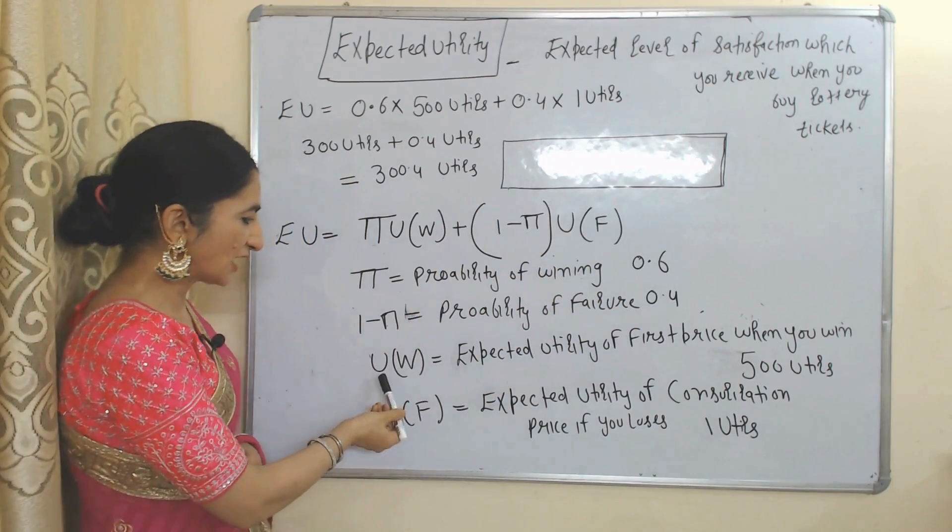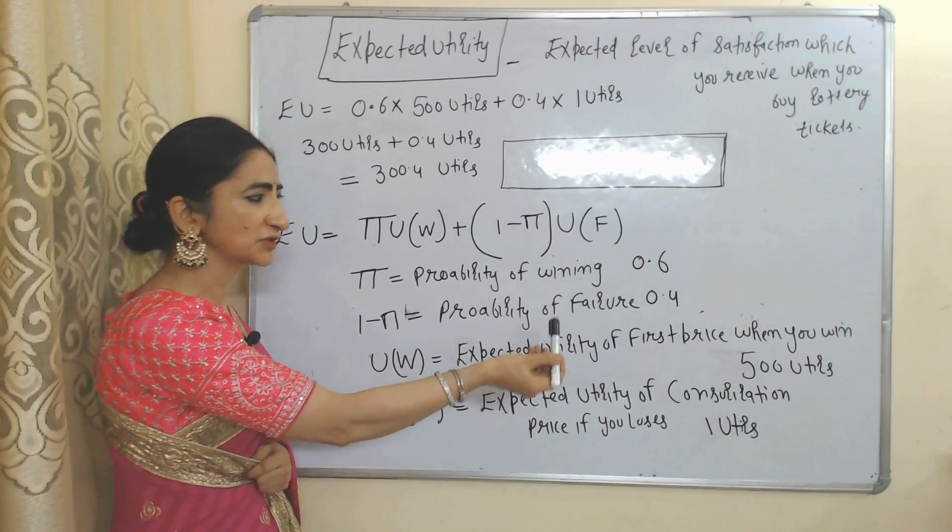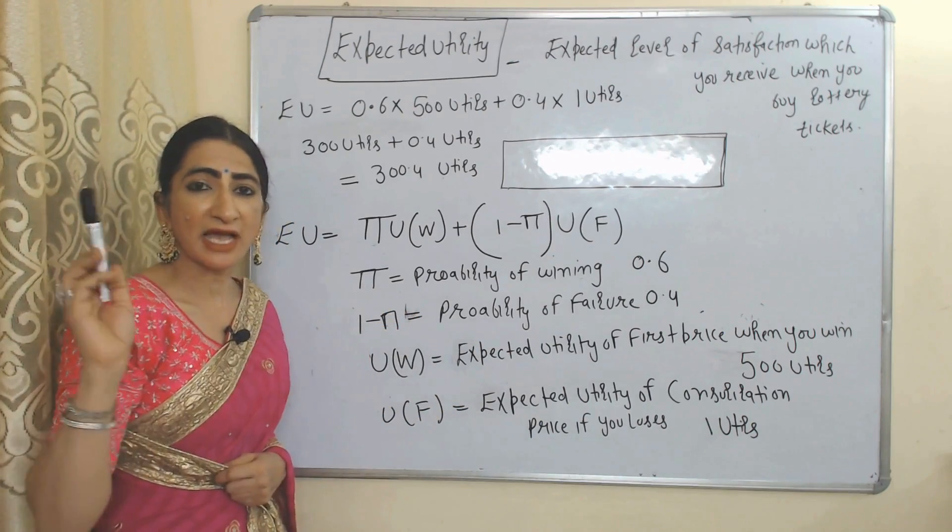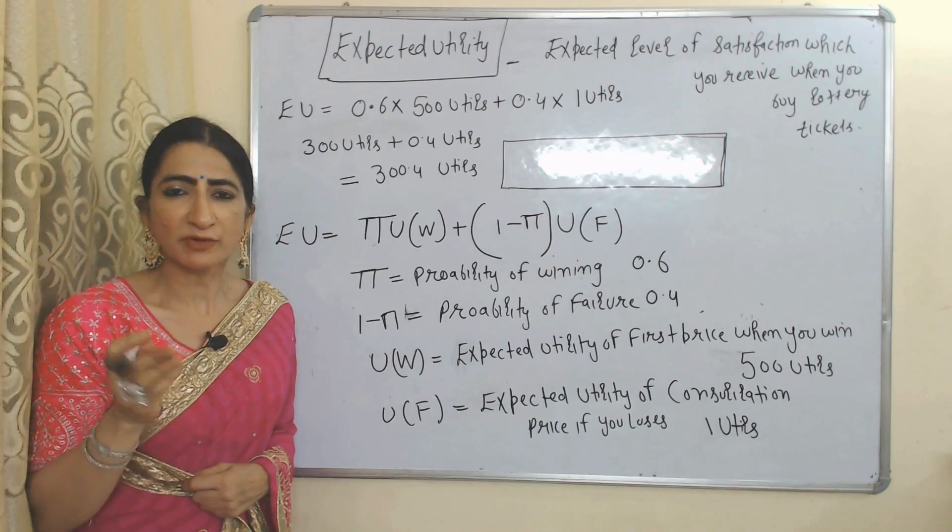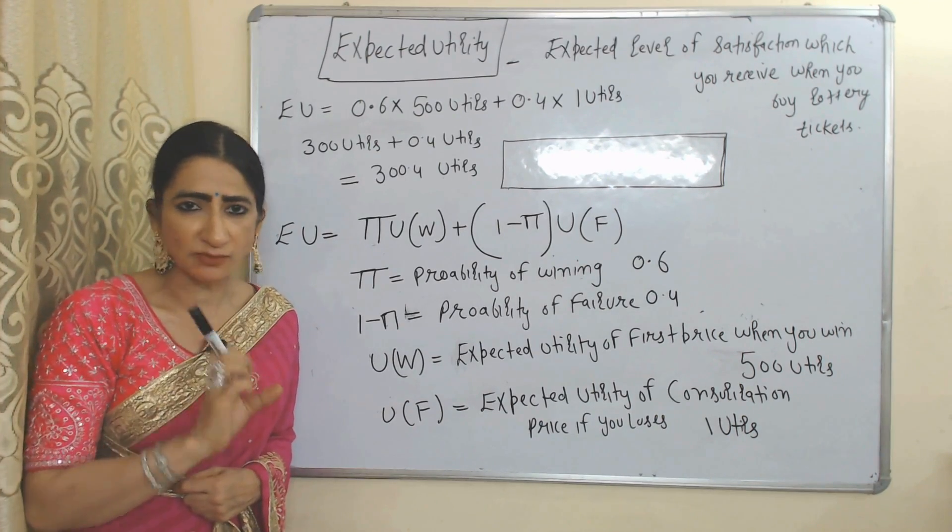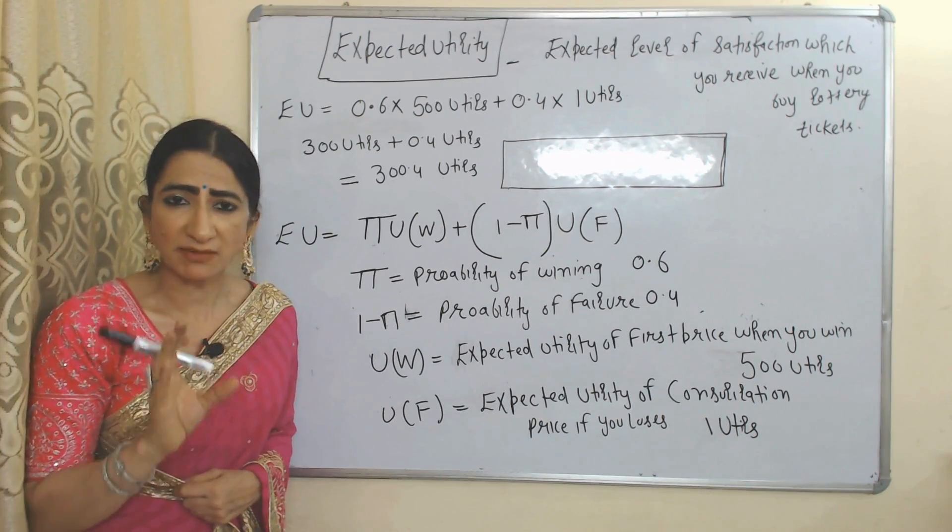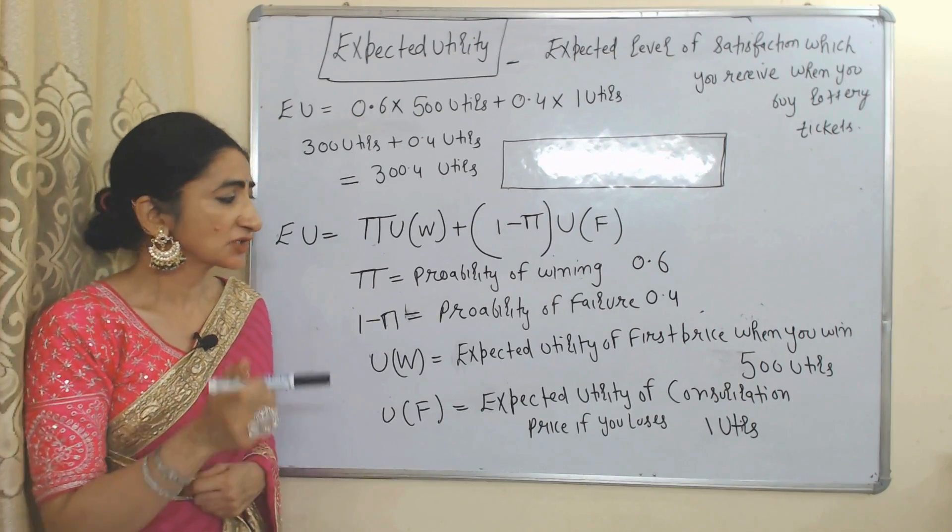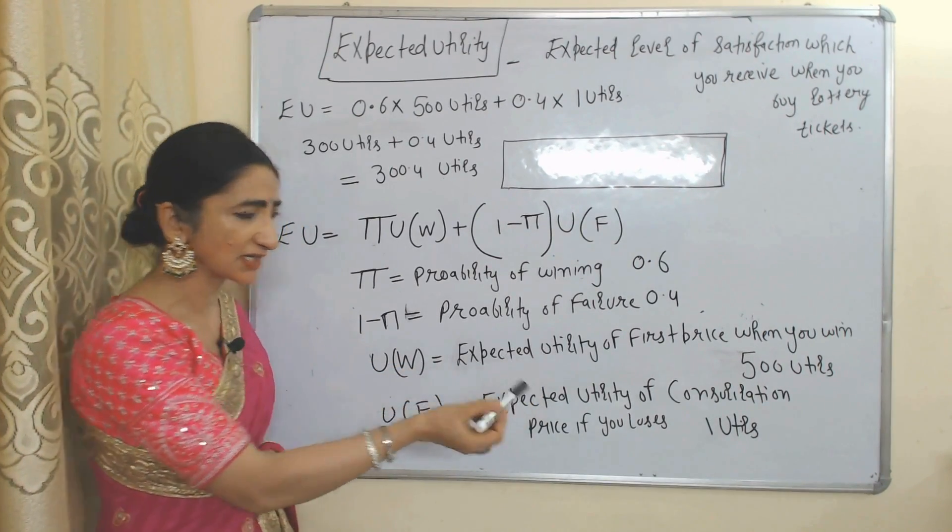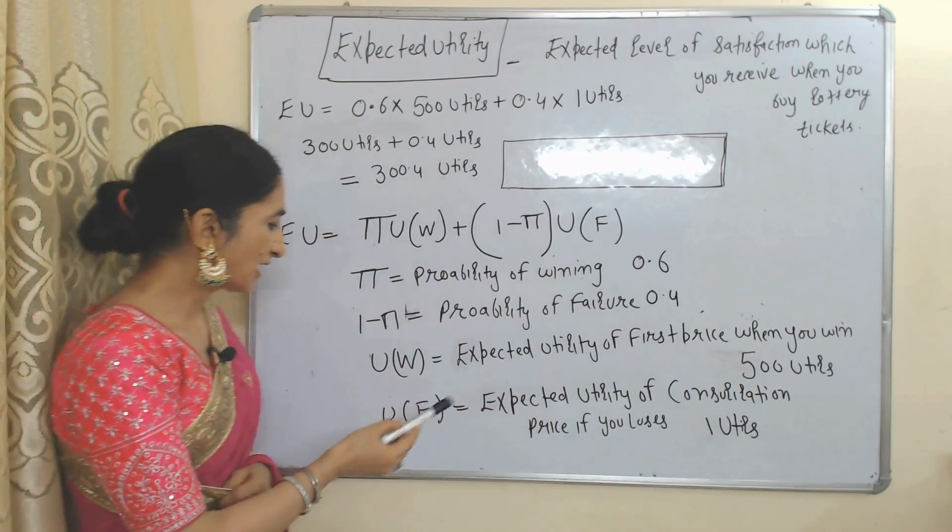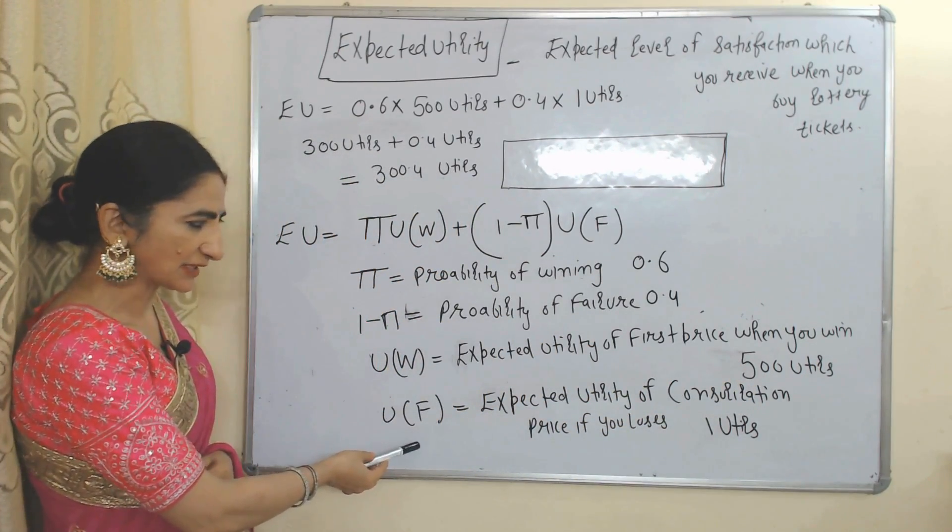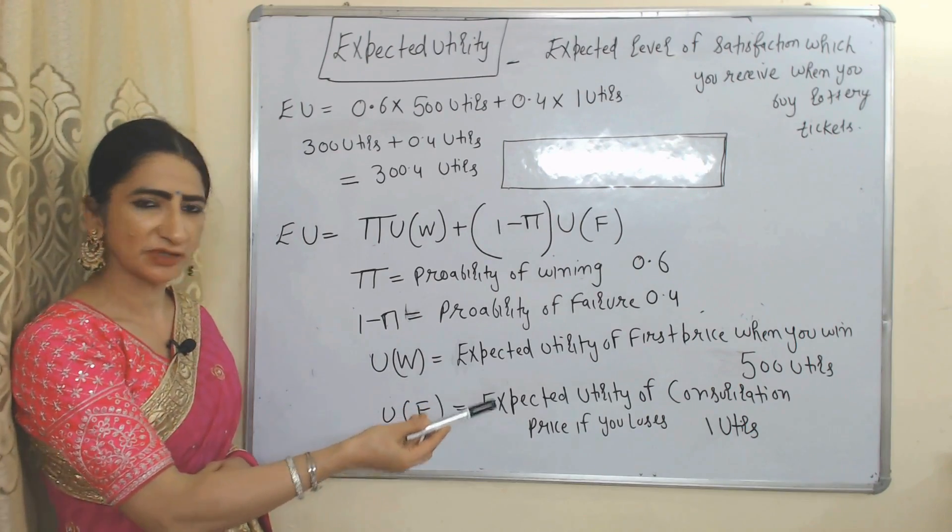U(W) means expected utility of first prize when you win. As we know, in case of cardinal utility, we measure utility in terms of cardinal numbers and these numbers are called utils. So here we assume expected utility of first prize when you win equals 500 utils. U(F) represents expected utility of consolation prize if you lose, which is equal to 1 util.